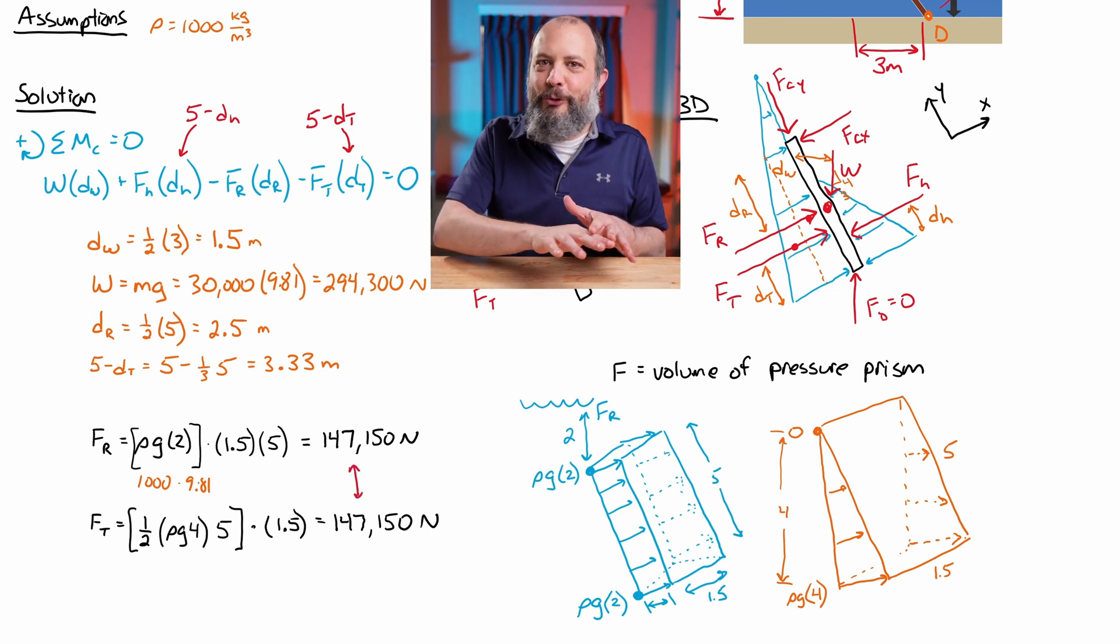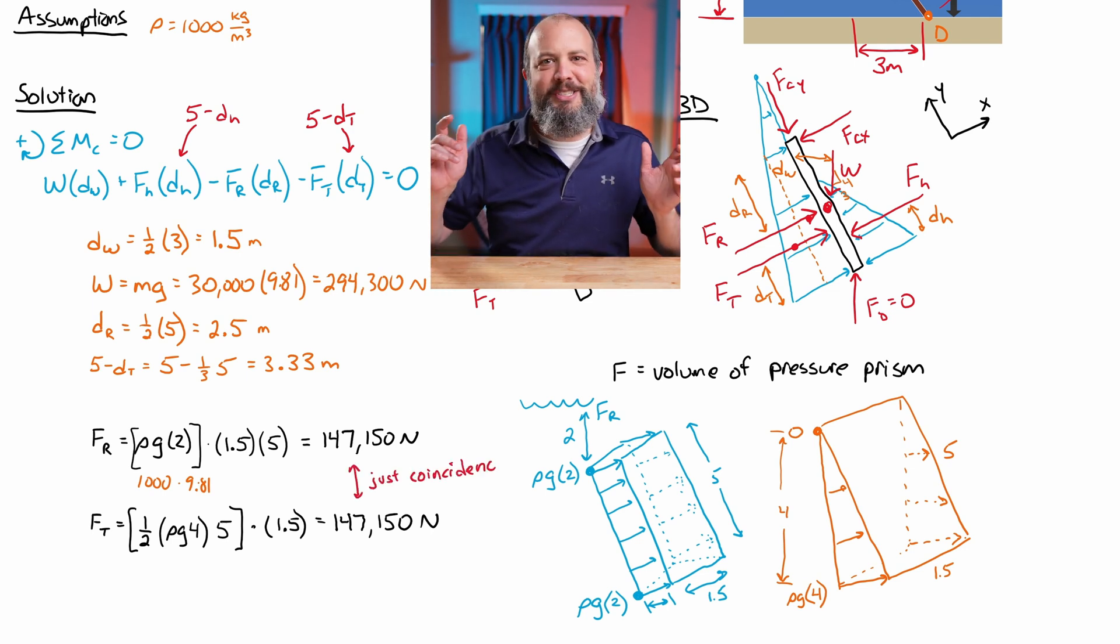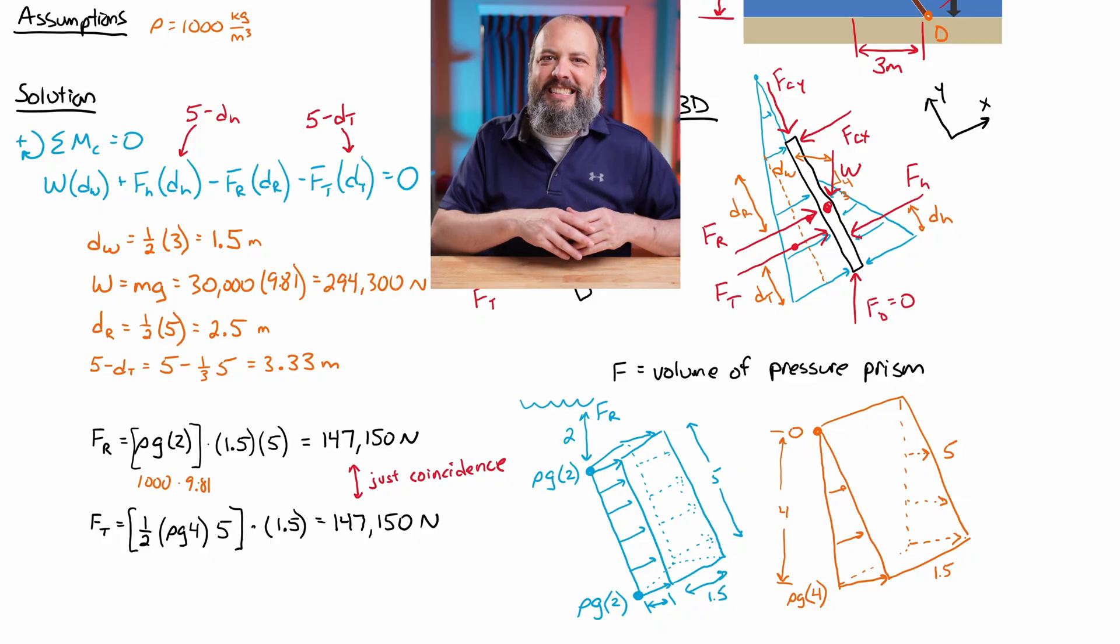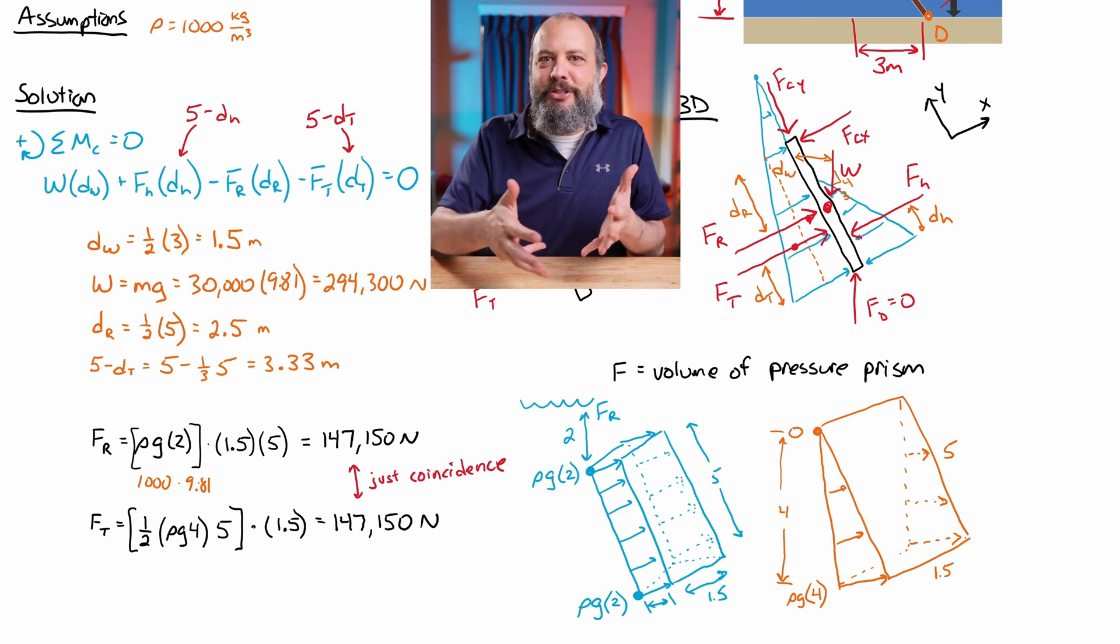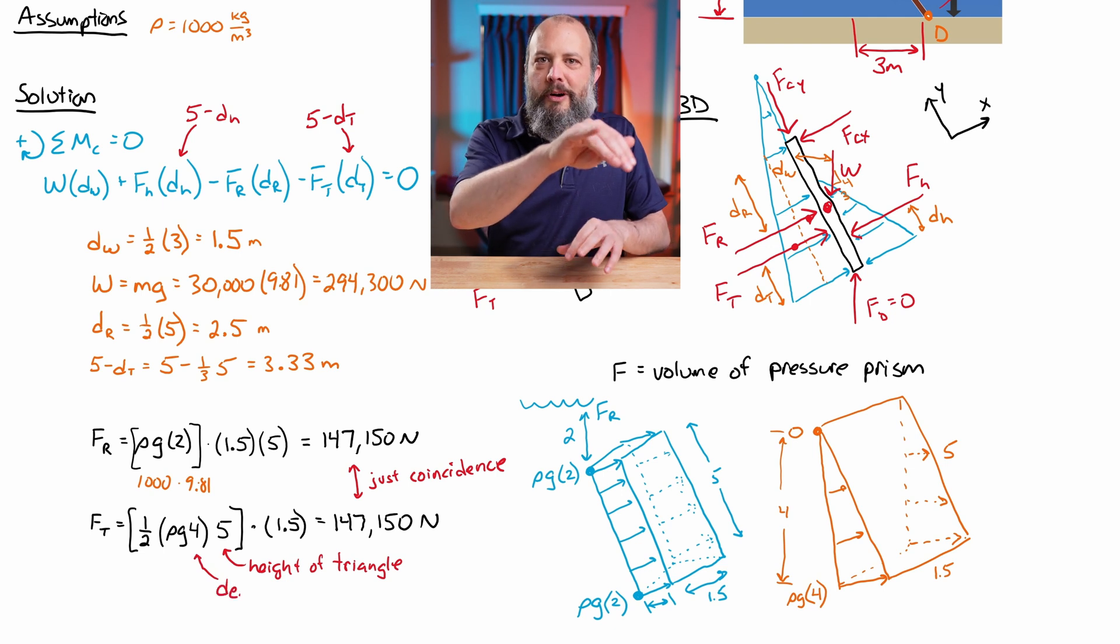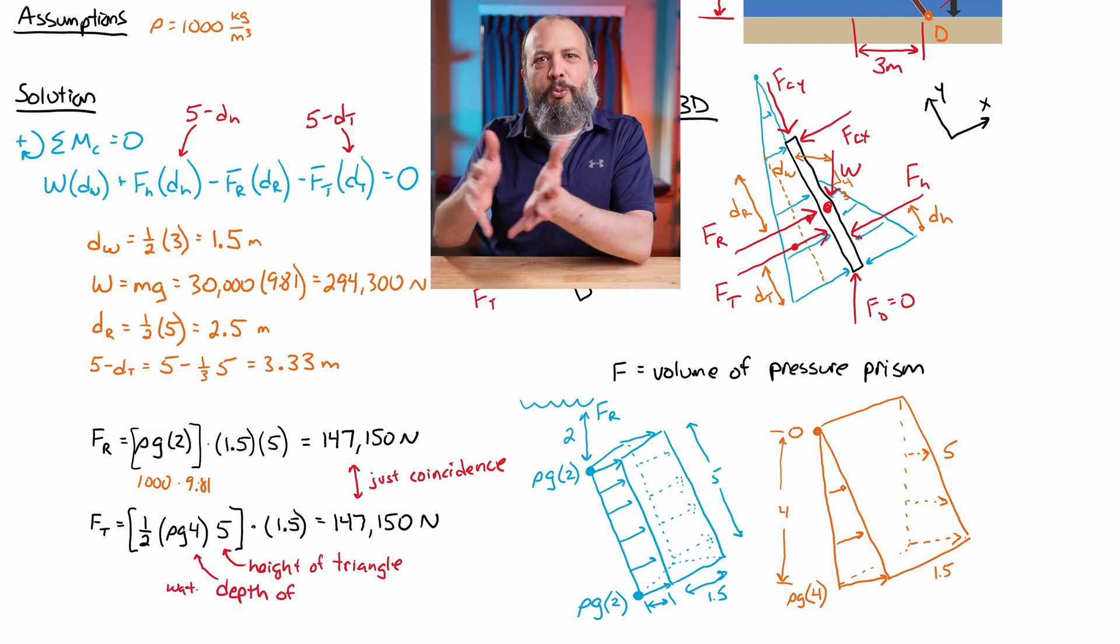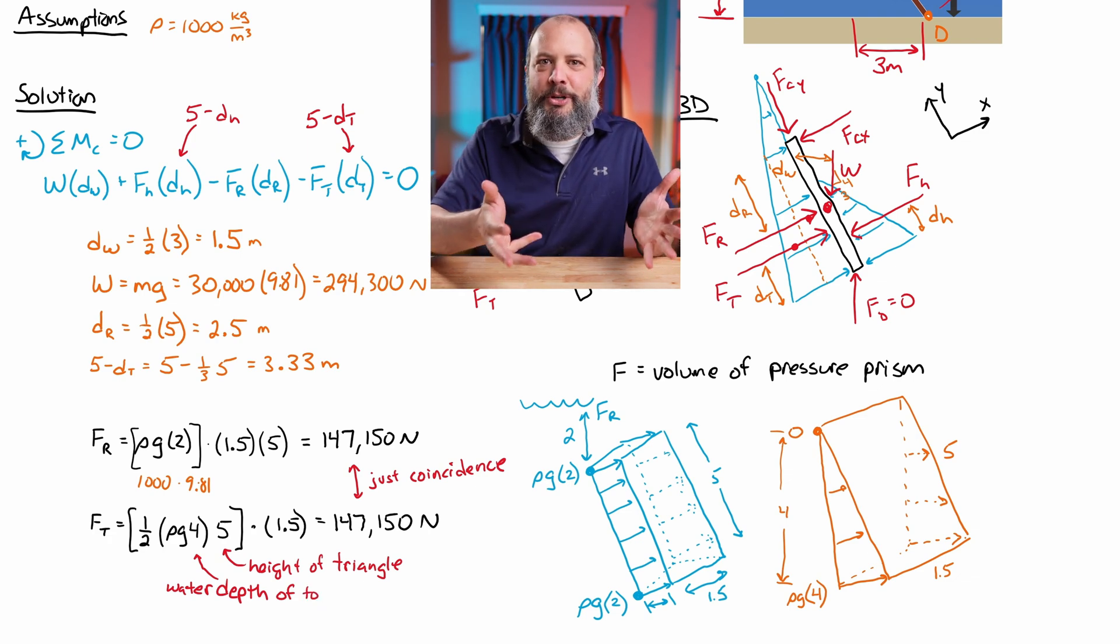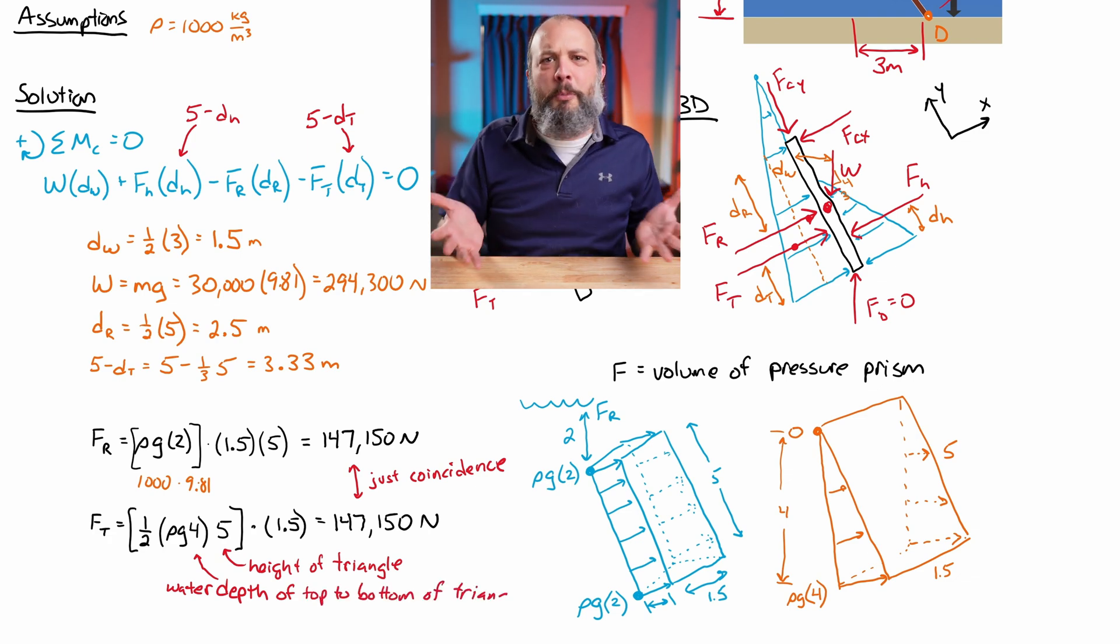And that's entirely coincidence. And these didn't have to work out that way. It just happened to in this case, because the depth of the triangle of four was exactly double the width of the rectangle, which was two. So they worked out to be the same volume. But in general, that's not normally going to be true. That was just a coincidence.